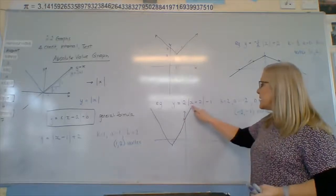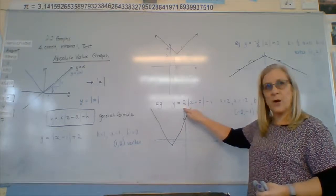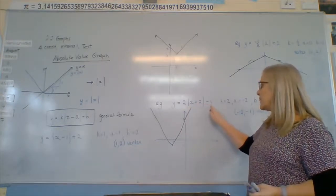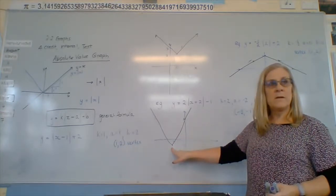Or negative two plus two is zero. Zero times two is zero. Minus one is negative one. So negative two will be at negative one.